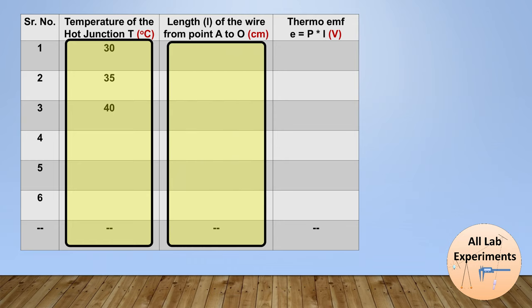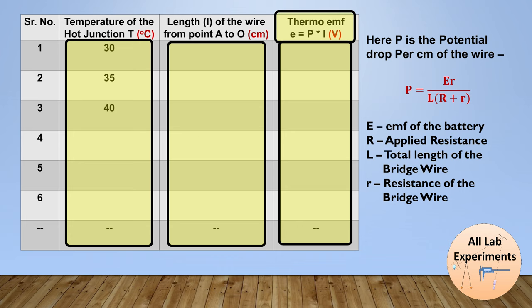Finally, we can calculate the potential of the thermocouple using this formula. Here P is the potential drop per centimeter of the wire, which can be calculated using this formula, and L is the length of the wire we observed for neutral point. All these quantities in this formula for P are known.